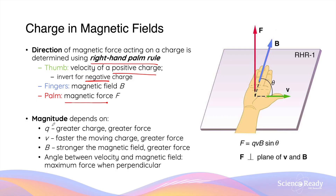The magnitude of the magnetic force acting on a charged particle is given by the formula qvB sinθ. q is the charge of the particle, v is the velocity of the particle, and capital B is the strength of the magnetic field in Teslas. The angle theta is the angle between the velocity vector of the charged particle and the magnetic field lines. If the velocity of the particle is perpendicular or 90 degrees to the magnetic field lines, then the angle here will be 90 degrees.